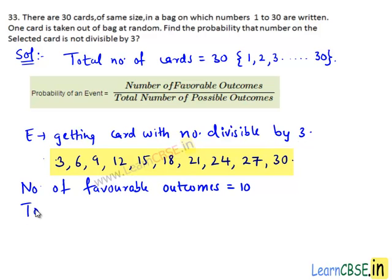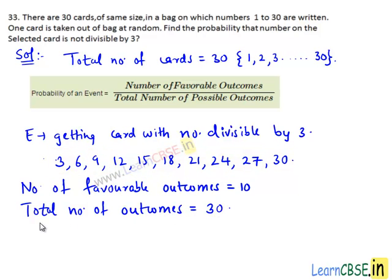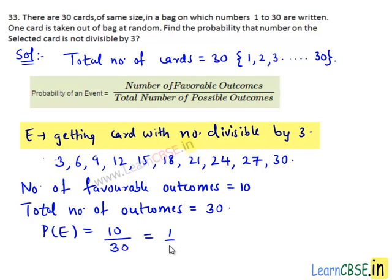The total number of outcomes equals the total number of cards, which equals 30. Then we have P(E) equals the number of favorable outcomes, which is 10, divided by the total number of outcomes, that is 30, which is equal to 1 divided by 3.